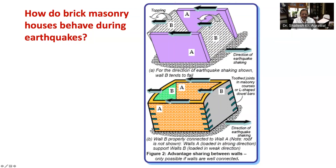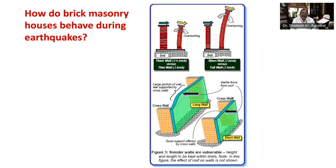If the walls are not tied together like a box, the walls loaded in the weak direction tend to topple, as shown in Figure 2A. Therefore, to ensure good seismic performance, all walls must be joined properly to the adjacent walls. This will ensure box-like integral action, as walls loaded in their weak direction can take advantage of the good lateral resistance offered by the walls loaded in their strong direction, as shown in Figure 2B. Also, walls need to be tied to the roof and foundation to preserve their overall integrity.